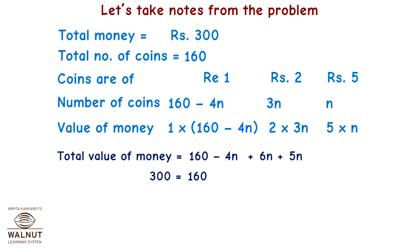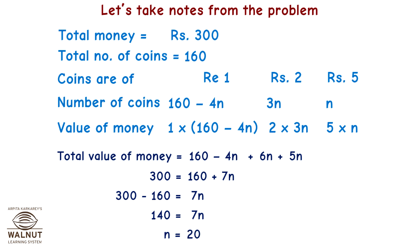We get 300 equals 160 plus 7n. Putting the variable term on one side, 7n equals 300 minus 160 which is 140, giving n equals 20. Once n is known, we get 20 coins of Rs 5, 60 coins of Rs 2, and 80 coins of Rs 1.